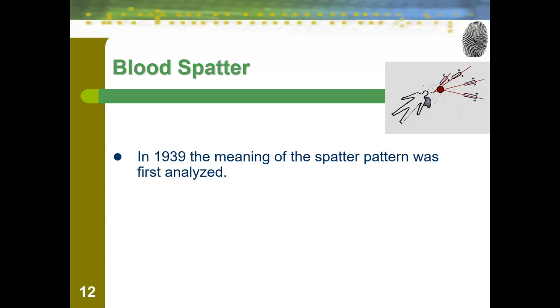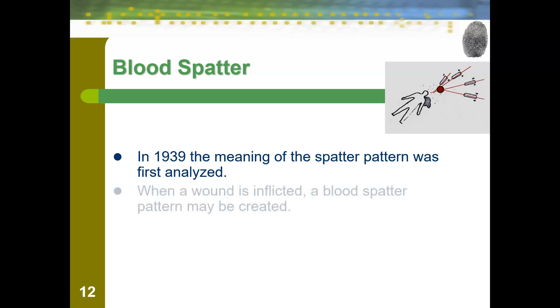The meaning of blood spatter pattern was not actually analyzed until 1939. Before that, we recognized that blood was falling in these patterns, but we really didn't think you could tell much from them, and now we know much better.